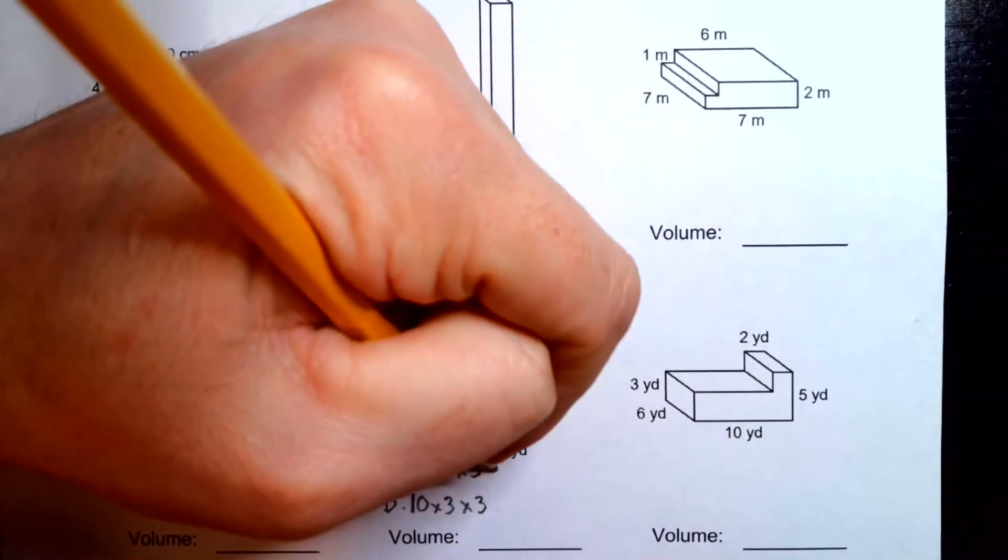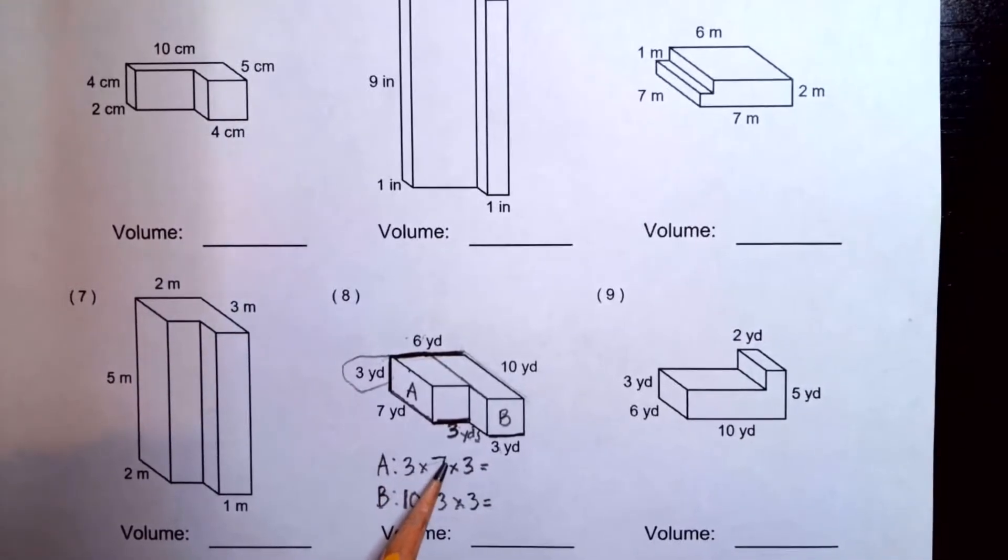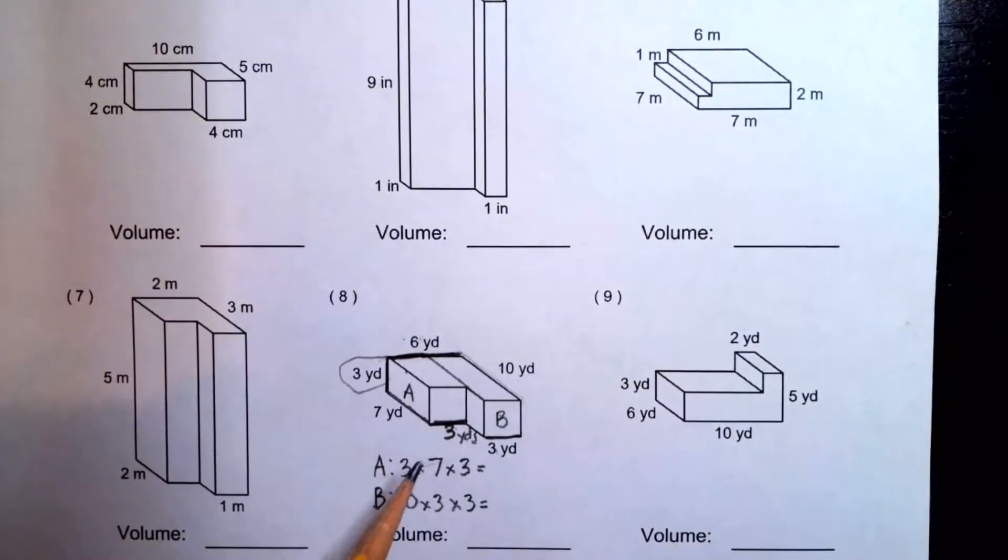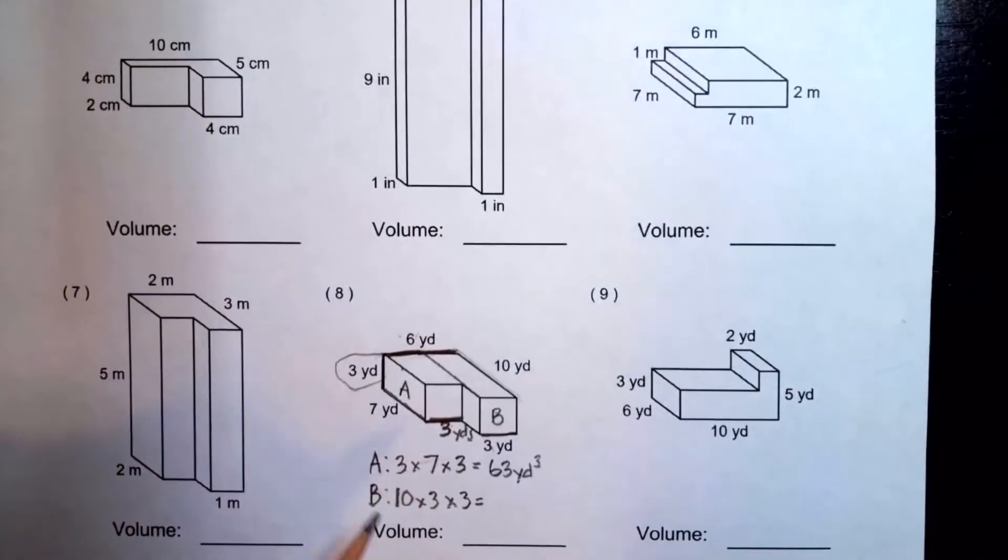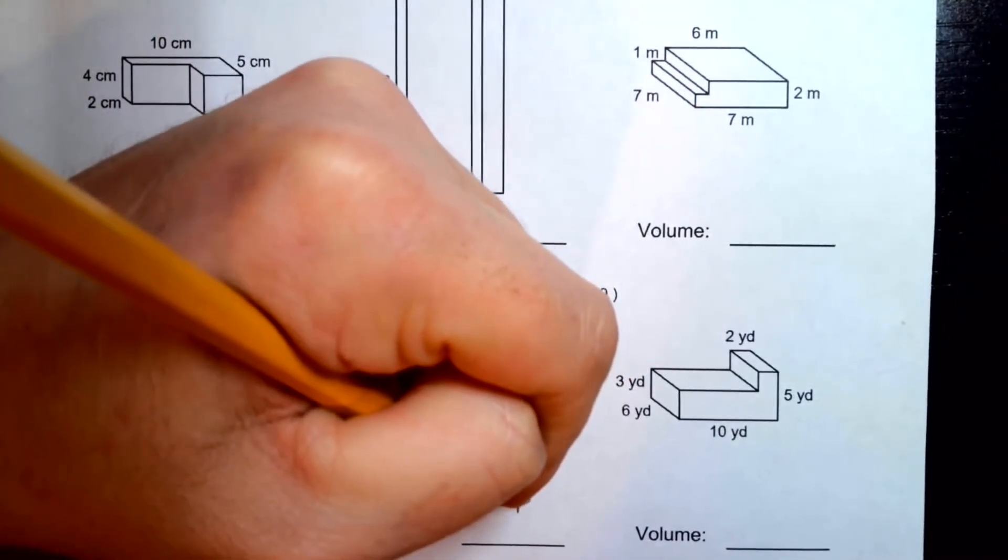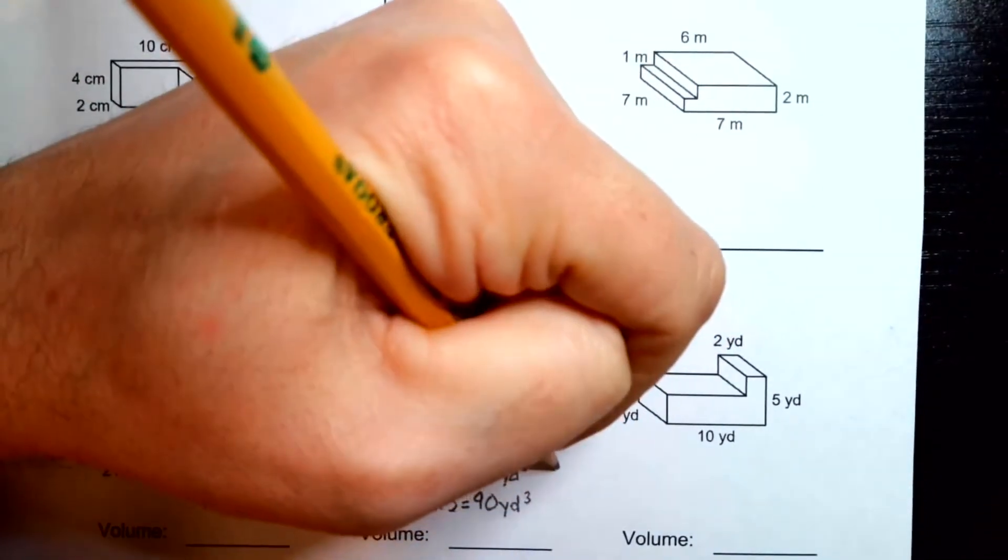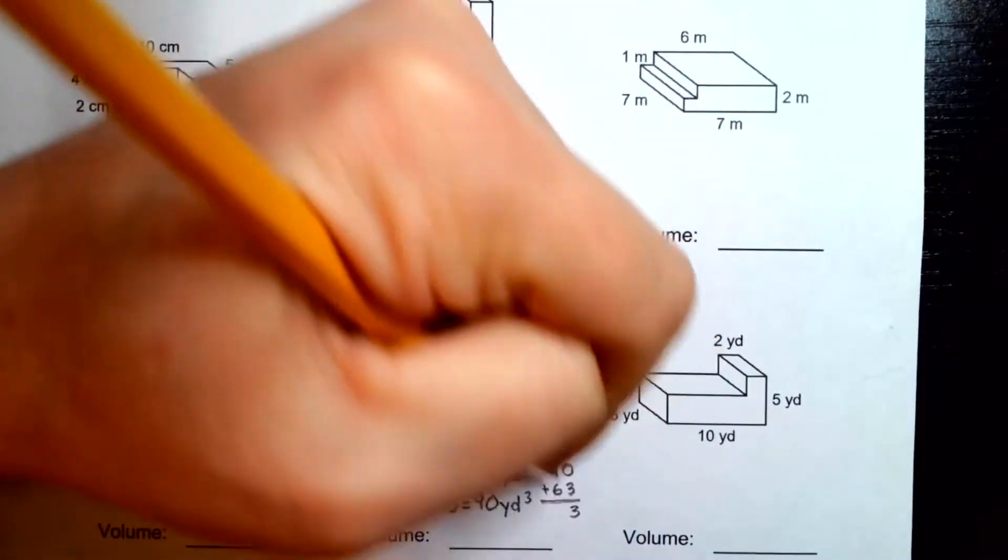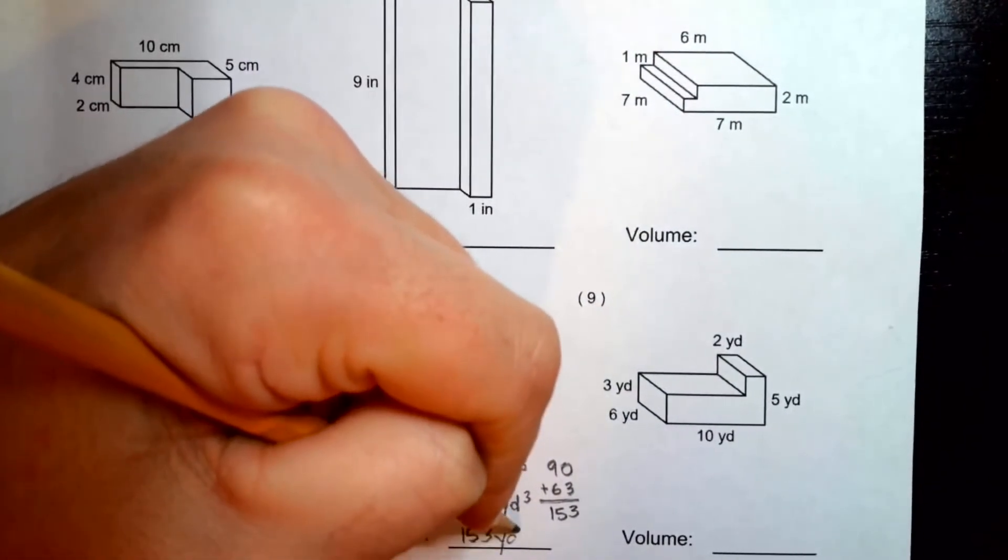Now that we've done that, we just have to do some multiplying. I'm going to switch the order around on this one. Three times three is nine. Nine times seven is 63. So, 63 cubic yards. And then, I'm just going to go in this order here. Three times three is nine. Nine times ten is 90. So, the volume of prism B is 90 cubic yards. And then, to get the total volume, I'm going to add these together. 90 plus 63. We'll add up the ones. Three plus zero is three. Nine plus six is 15. That's our final answer. So, it's going to be 153 cubic yards.